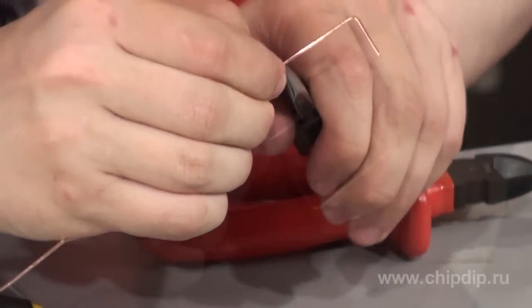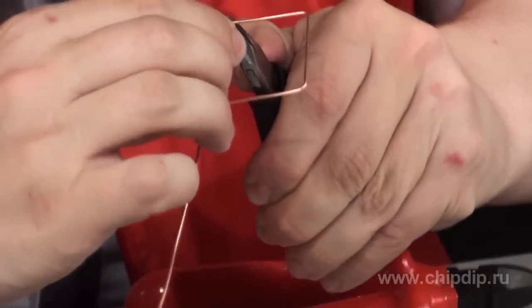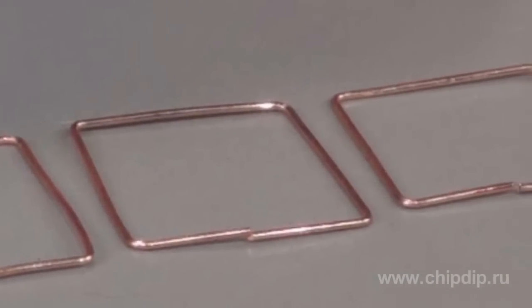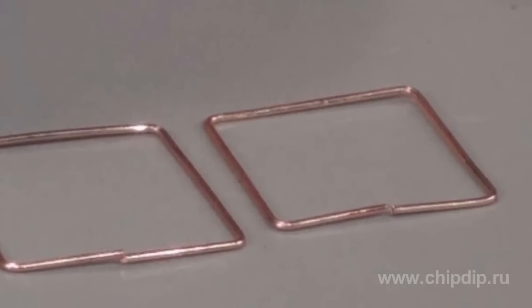Thus we shall spend less time for soldering. So we bend three frames out of the wire with dimensions 32x32, 34x34, and 37x37 millimeters respectively.